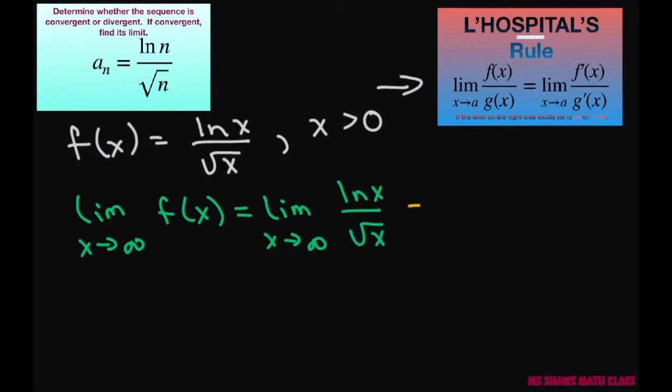Now applying L'Hopital's rule, we're taking the derivative of the numerator which is 1 divided by x. So the limit as x approaches infinity, we get the derivative of ln of x is 1 divided by x, and the derivative of the denominator is going to be 1 divided by 2 square root of x.